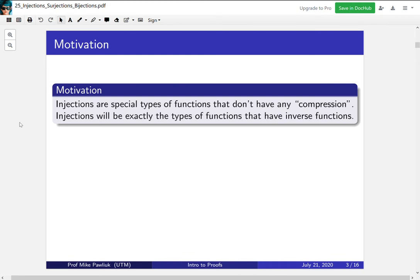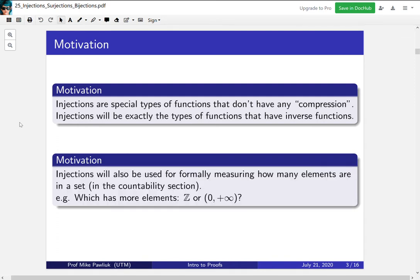We have two pieces of motivation for this. One is that injections are special types of functions that don't have any compression. The basic idea is that injections are going to preserve a lot of stuff and not compress anything. Injections for us will also be exactly the type of functions that have inverse functions. Another bit of motivation for later in the course is that injections will be used for formally measuring how many elements are in a set. This will be in the Countability section.